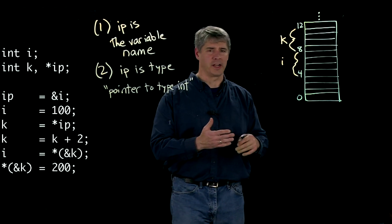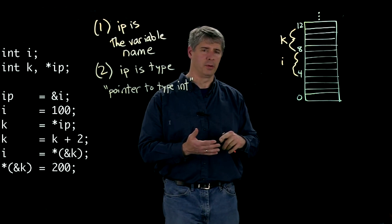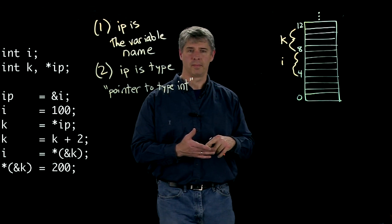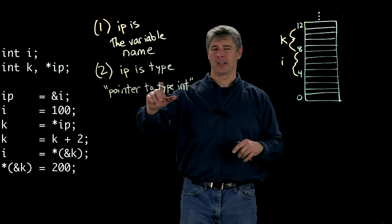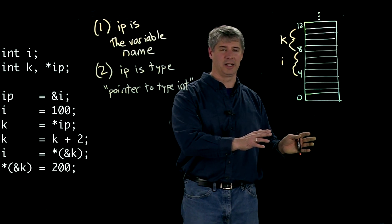So just like we have four data types, char, float, int, double, we can also have different data types that are pointers to each of those data types.